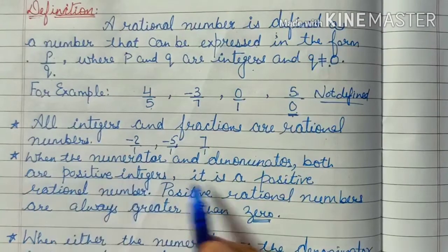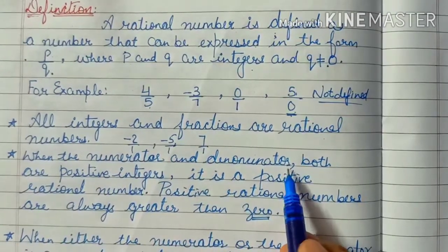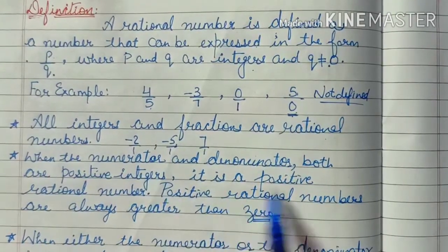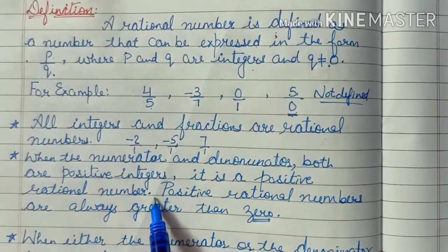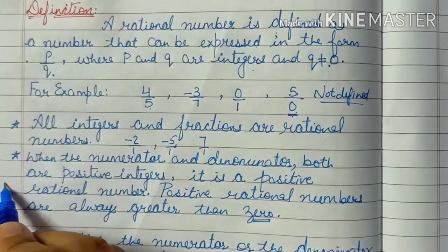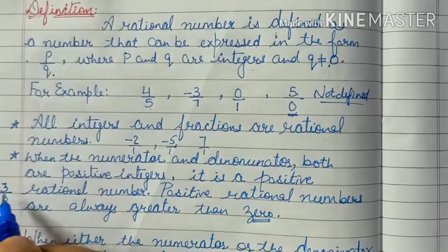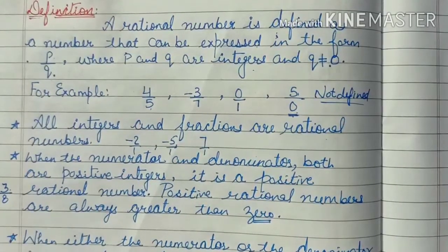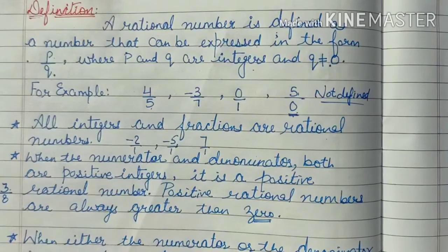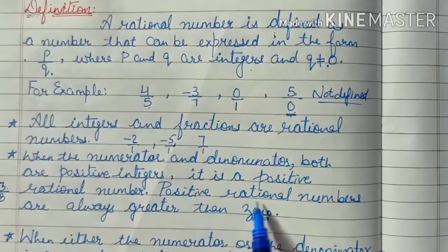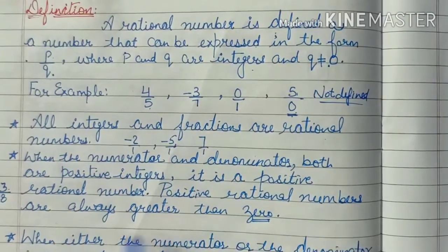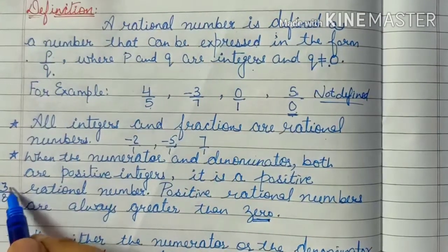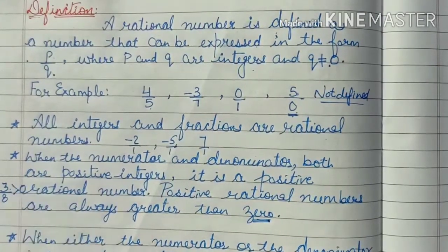When the numerator and denominator both are positive integers, it is a positive rational number. For example, 3 upon 8 — here 3 is also positive and 8 is also positive, so it is a positive rational number. Remember that positive rational numbers are always greater than 0.